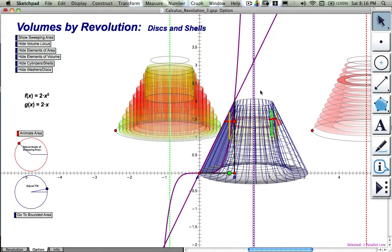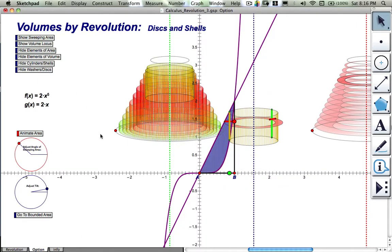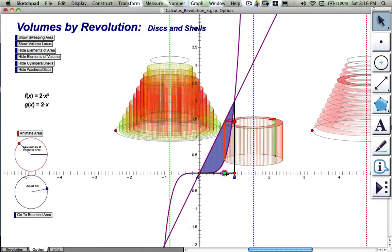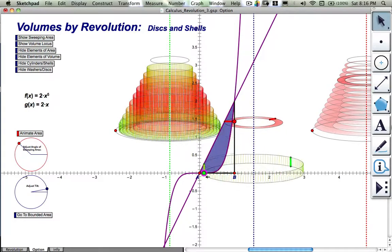So if we move the axis to the other side of the region of area, then we get a totally different looking volume, and now the radius, let's see, I'll get rid of that and I'll look at the shell.